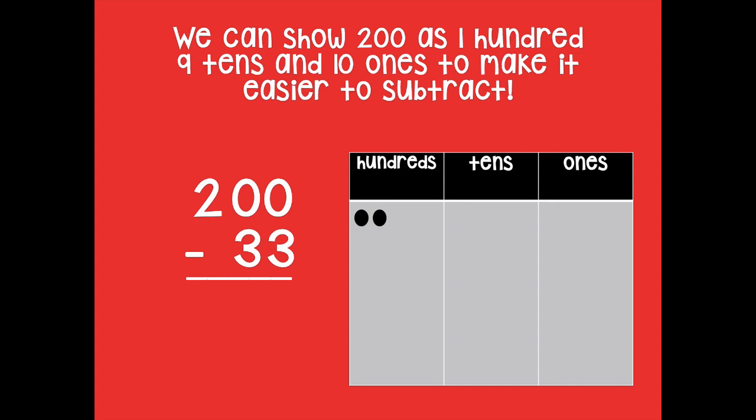So again, remember we can take that 200 and show it as 100, 9 tens, and 10 ones to make it easier to subtract. So I'm going to do just that. So this hundred turns into 10 tens, but let's take one of those tens and turn it into 10 ones.